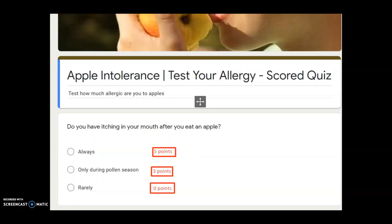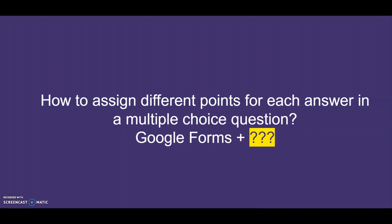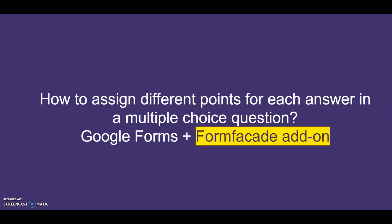To run these kinds of scored quizzes, I should be able to assign different points for each of the answer choices of a single question. This is not possible with the pass-fail quiz type that Google Forms offers by default. However, FormFaçade can solve this problem. Here's how you can create scored quizzes in Google Forms using FormFaçade add-on.